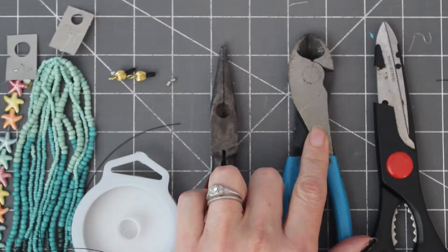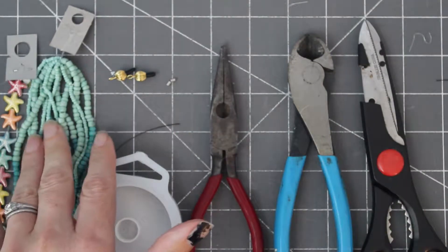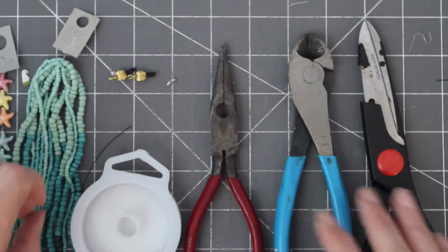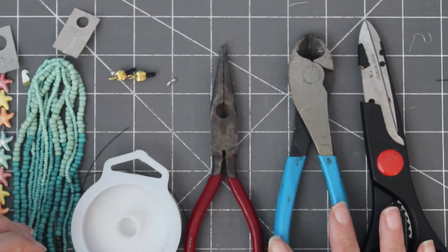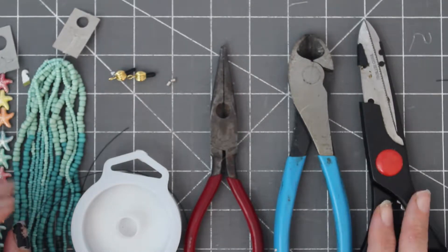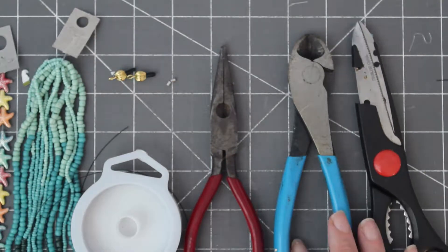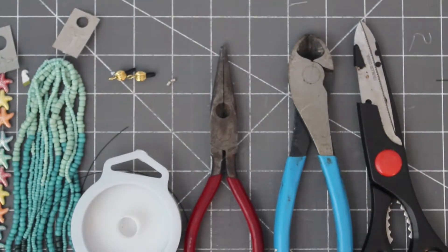Pliers, wire cutters, and scissors particularly if you have seed beads. Now with this wire being so thin, you could probably use your scissors instead of the wire cutters if you don't have wire cutters. However, I would use your everyday use scissors that you don't mind dulling if it happens. Okay, let's get started.